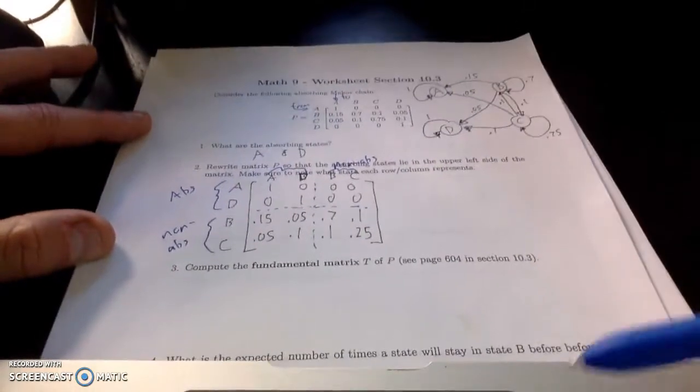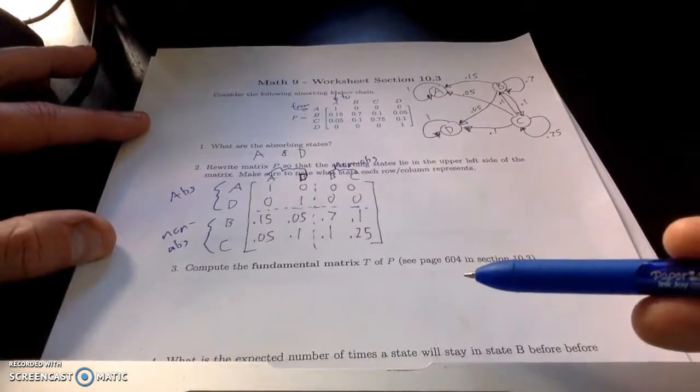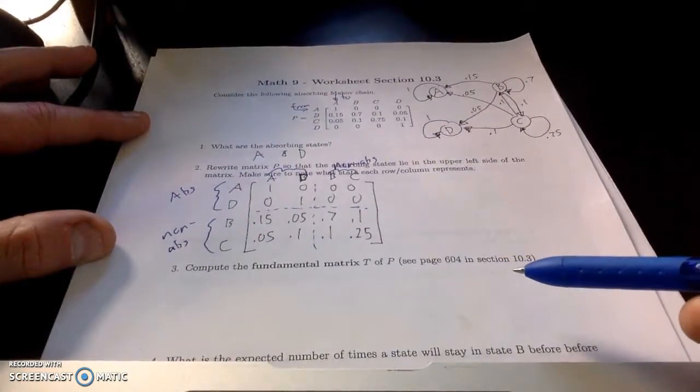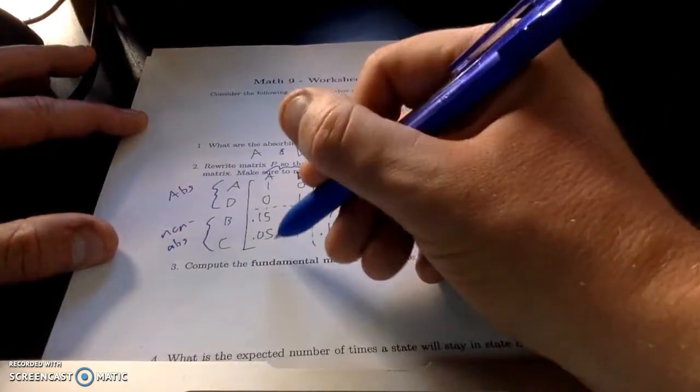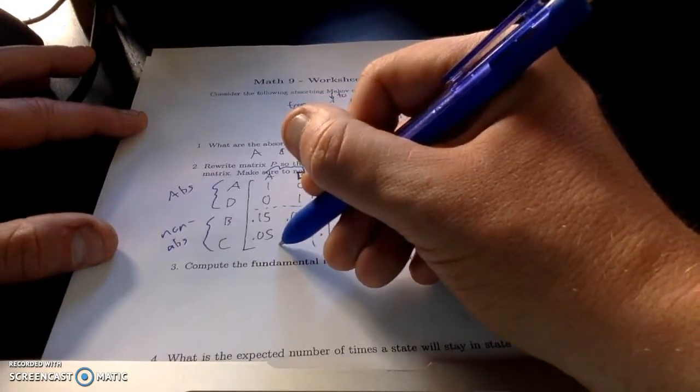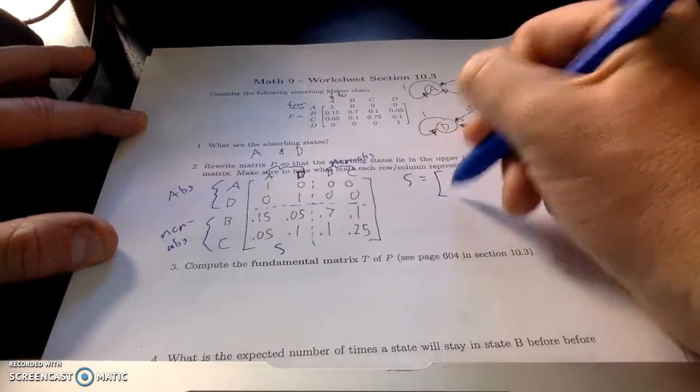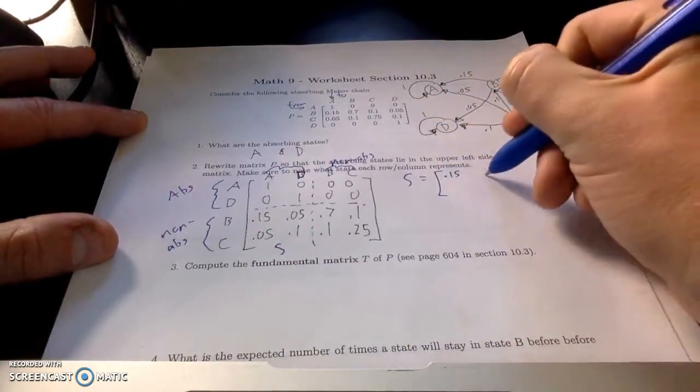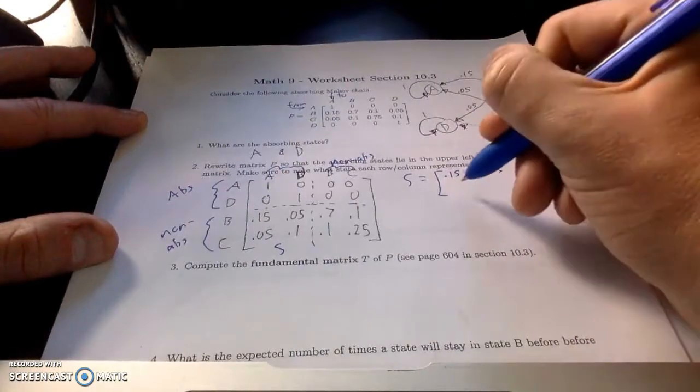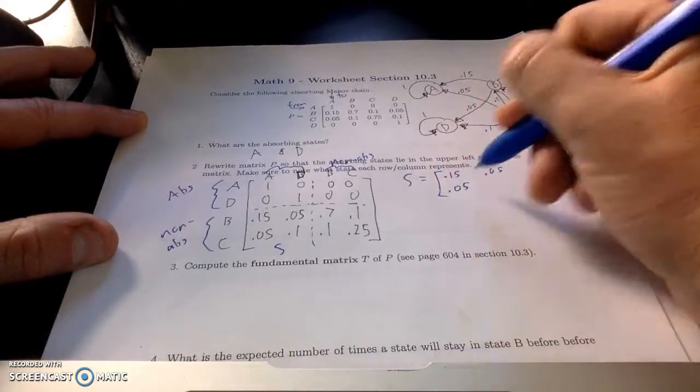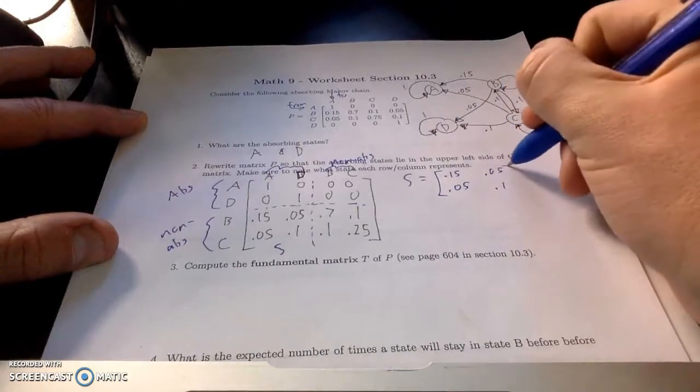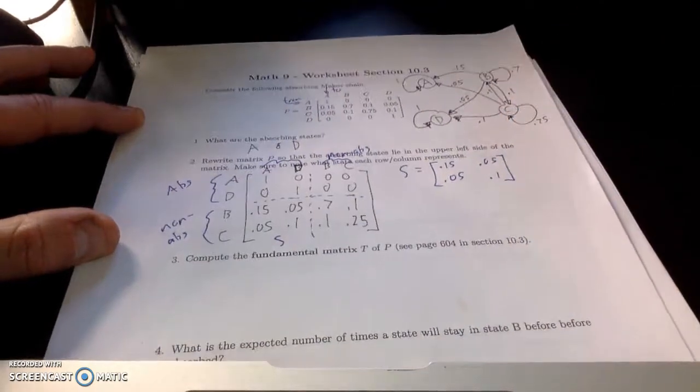This bottom right. And again, don't worry about memorizing this. Reference page 604 in chapter 10.3. Write this down in your own notes. This bottom matrix, we're going to call this S. So S is 0.15, 0.05, 0.05, 0.1. There's matrix S.